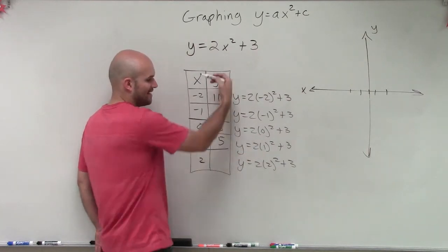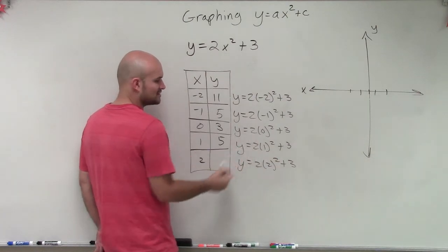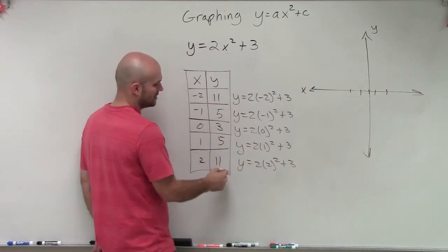Again, we notice that we're just going to have this reflection going on. And 2 squared is 4. 4 times 2 is 8. 8 plus 3 is 11.